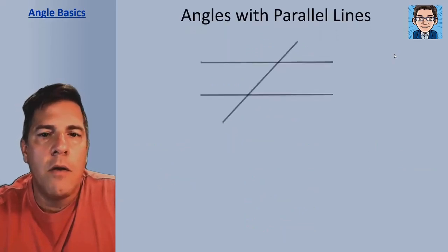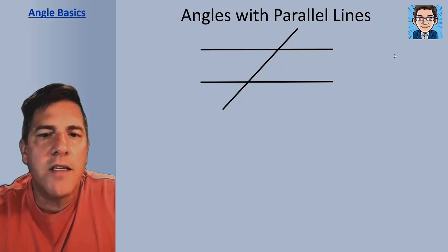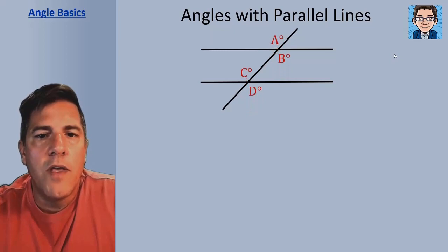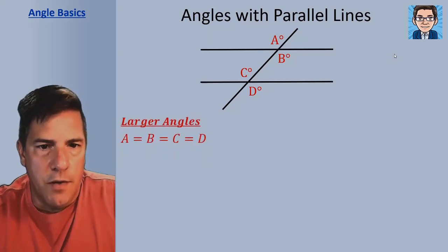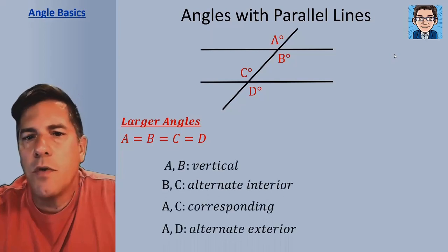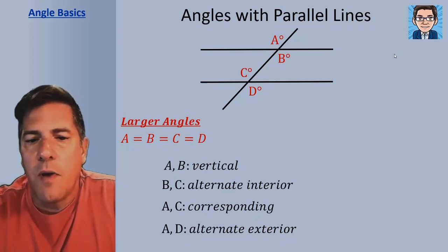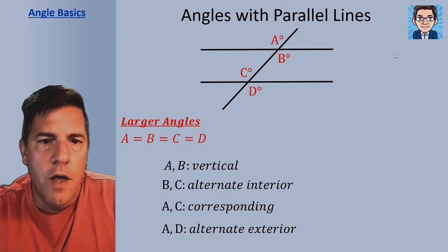Now, angles when one line crosses two parallel lines. If the two lines are parallel and we have a line that crosses them, we're going to get eight different angles. Unless it crosses perpendicularly, it's going to form four angles greater than 90 degrees and four angles smaller than 90 degrees. The four angles I've labeled A, B, C, and D are all greater than 90 degrees and are all going to be equal to each other. A and B are vertical angles, B and C are alternate interiors, A and C are corresponding angles, and A and D are alternate exterior angles.